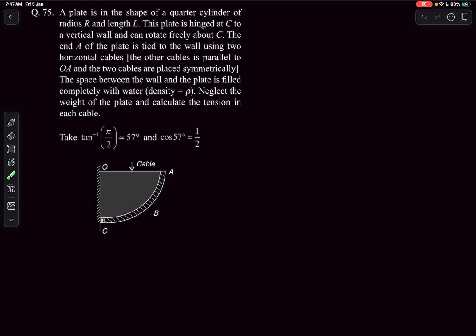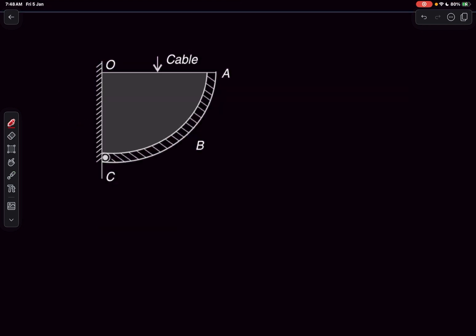Now let's move on to the next question, which is similar to the previous problem but more challenging. We have a plate in the shape of a quarter cylinder of radius r and length l. This plate is hinged at C to a vertical wall and can rotate freely about C. The end A of the plate is tied to the wall using two horizontal cables placed symmetrically. The space between the wall and the plate is filled completely with water. We neglect the weight of the plate and calculate the tension in each cable.